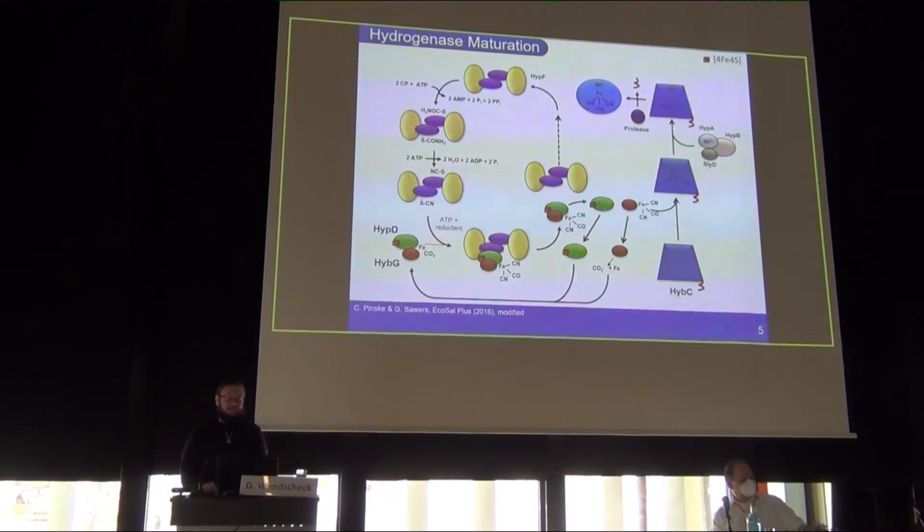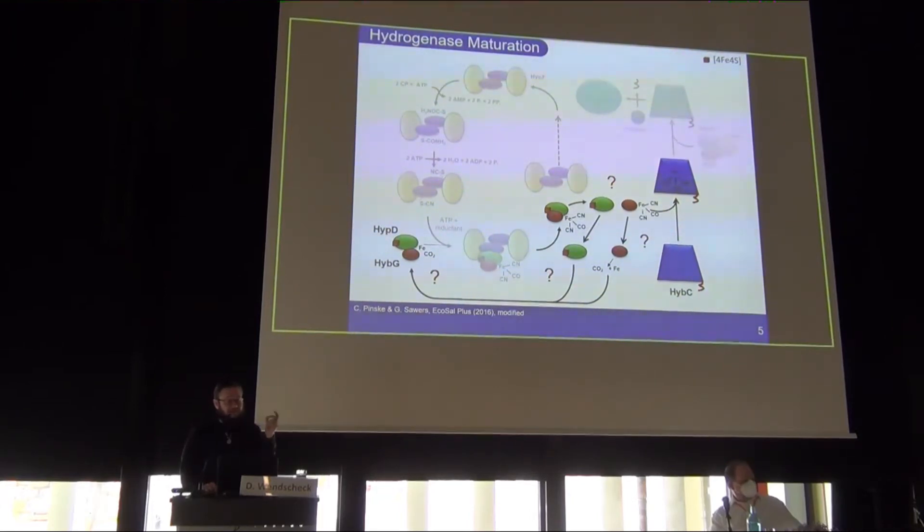Because when you take a look at this hydrogenase maturation cycle for hydrogenase 2 of E. coli, there are four of those hydrogenases, the maturation cycles are pretty complicated. I don't want you to focus on the whole process because the most interesting parts are the lower ones where we have three major proteins: the green one HIP-D, HIP-G the red one, and the blue one which is the catalytic subunit of this hydrogenase HIP-C. The question here was, does this maturation cycle really look like this? Because all of this was based on assumptions and hypotheses. There were no interaction studies at all at this point and our task was to verify this maturation cycle somehow.